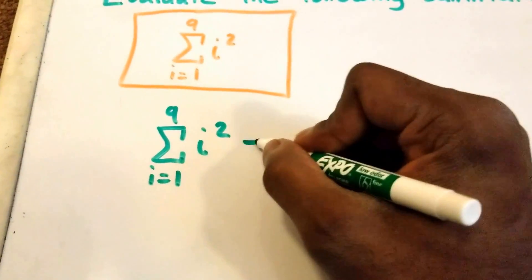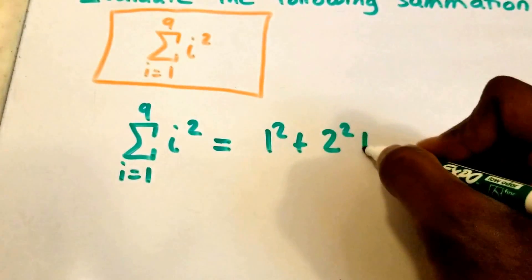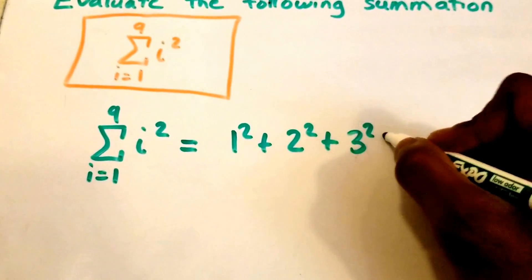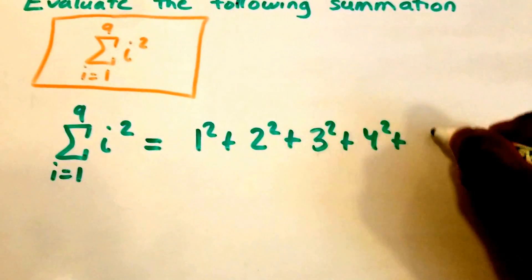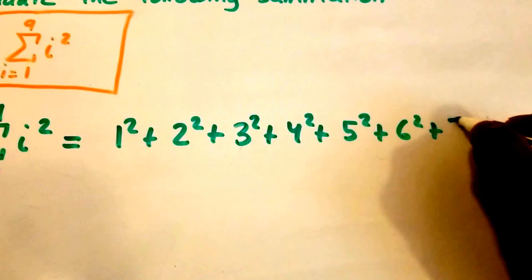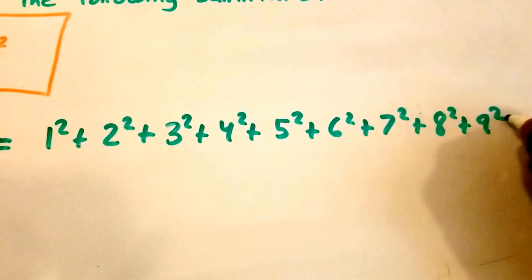This is really equal to 1 squared plus 2 squared plus 3 squared plus 4 squared plus 5 squared plus 6 squared plus 7 squared plus 8 squared plus 9 squared.